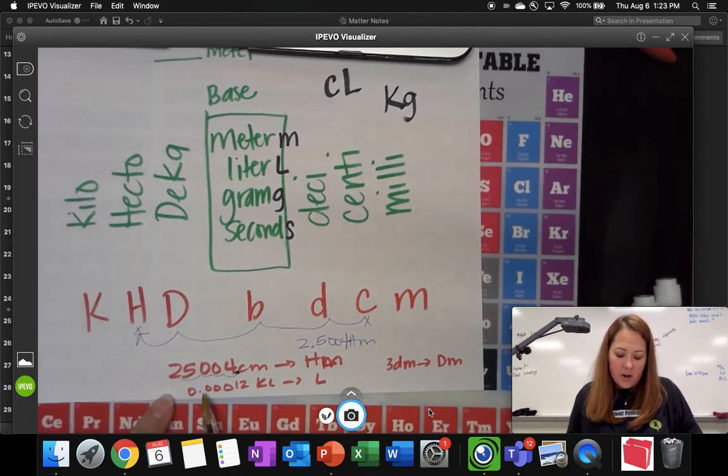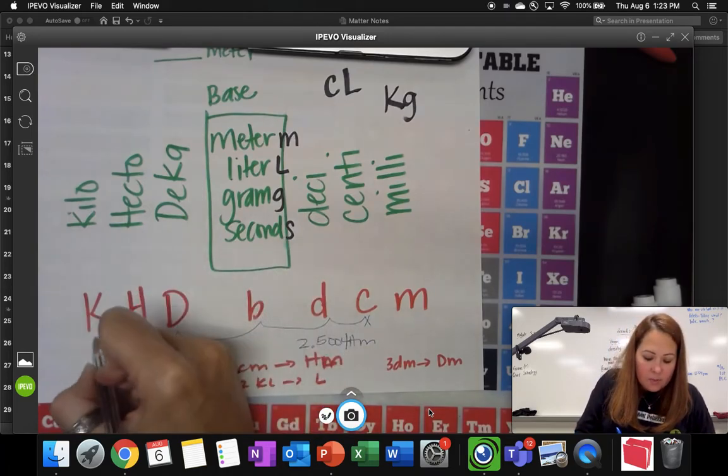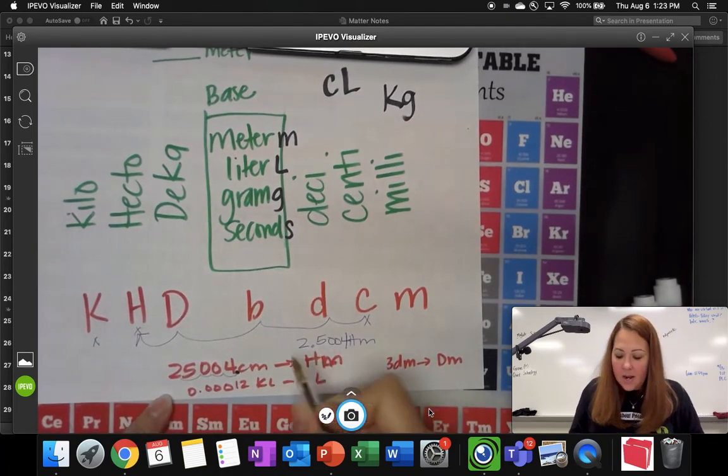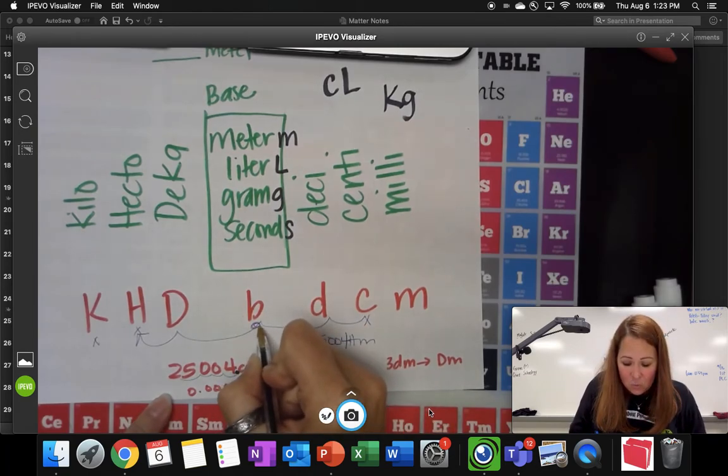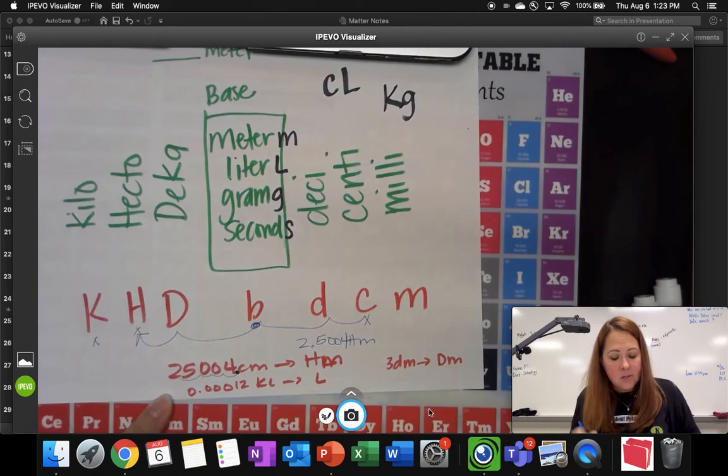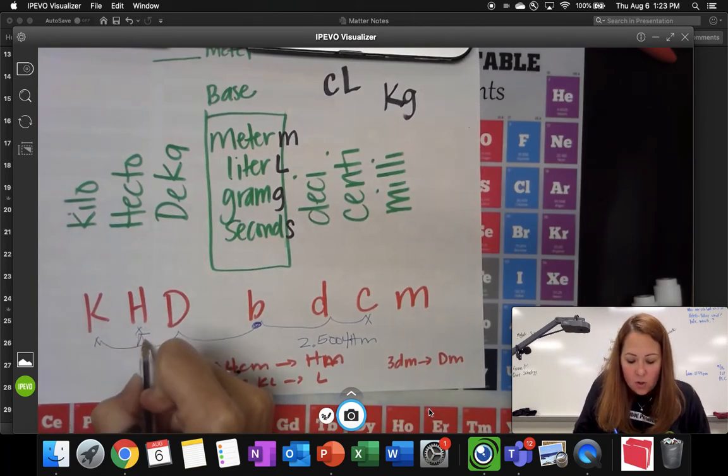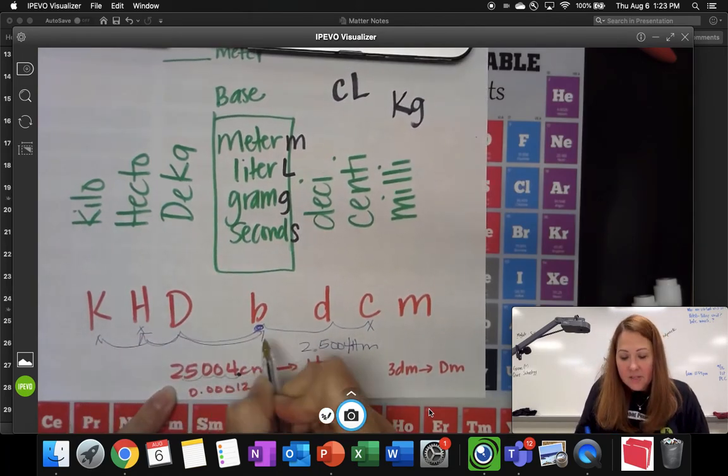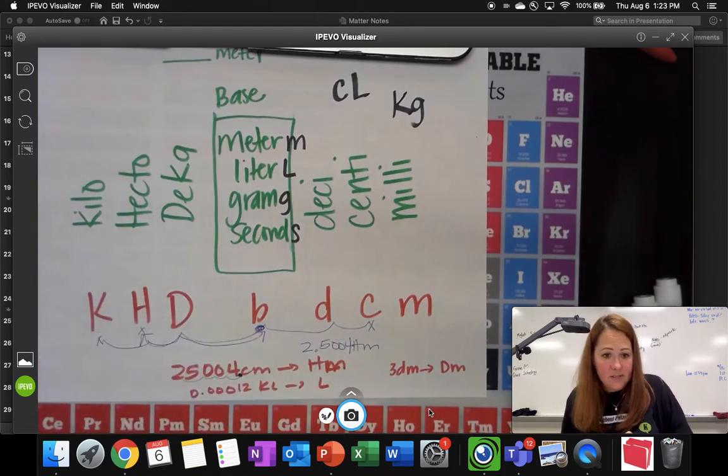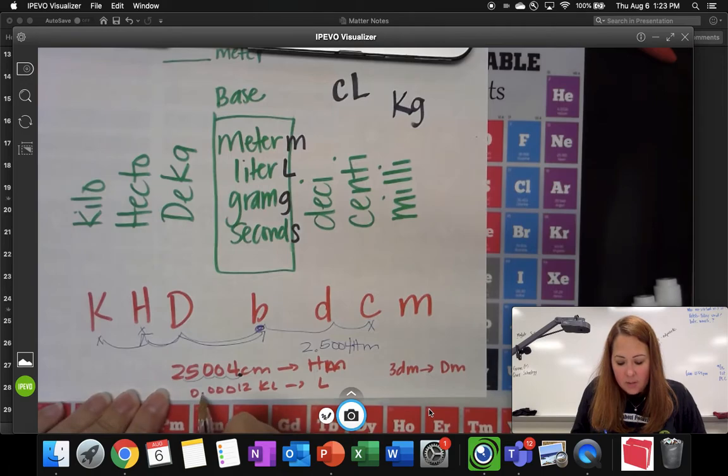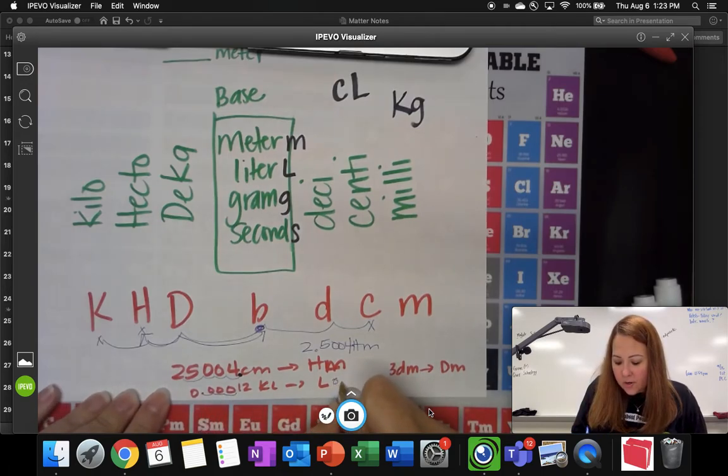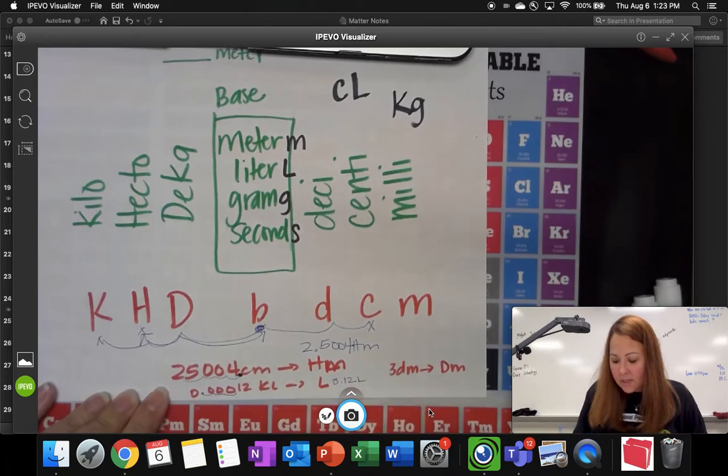When we look at the next one here, I have 0.00012 kiloliters. So this one I'm going to start here. And I'm going to end at liters, just it's all by itself. So that means that I'm going to end right here at base. So again, I'm going to move my decimal place one, two, three times. This time I'm going that way with my decimal. So I'm going to start with my original decimal place. And again, I move one, two, three times. So my answer down here is 0.12 liters.